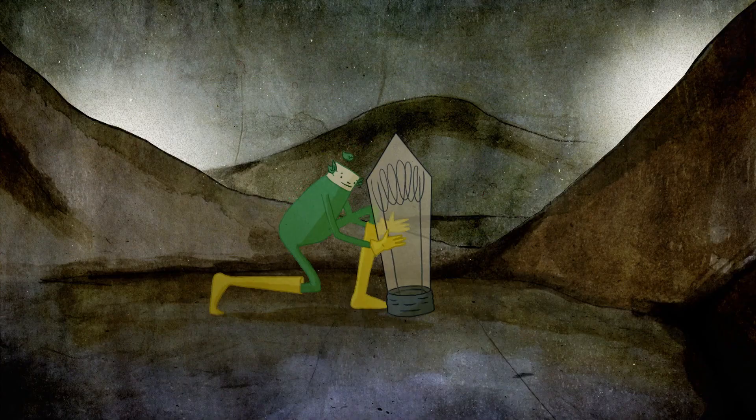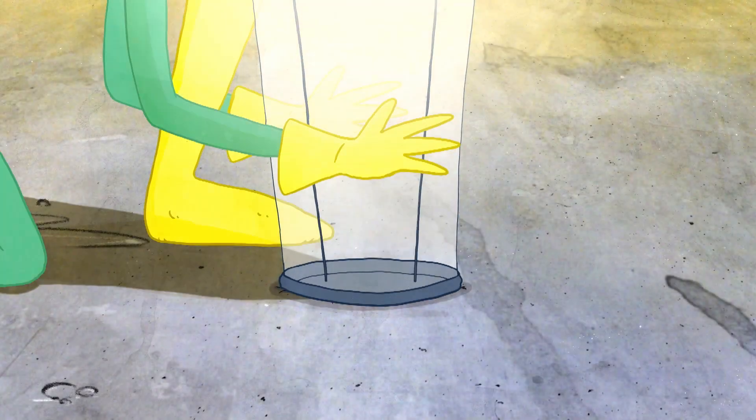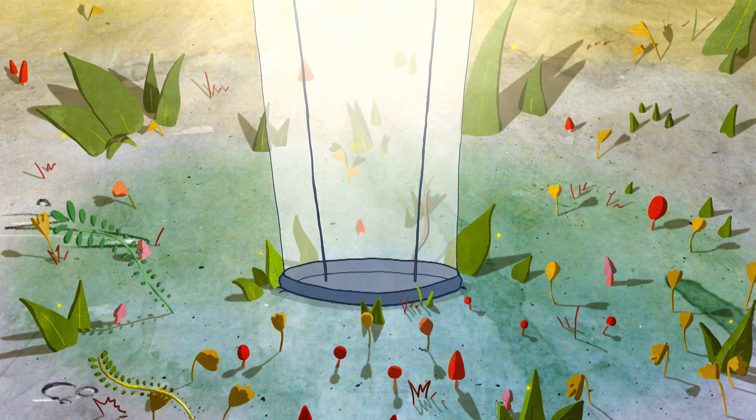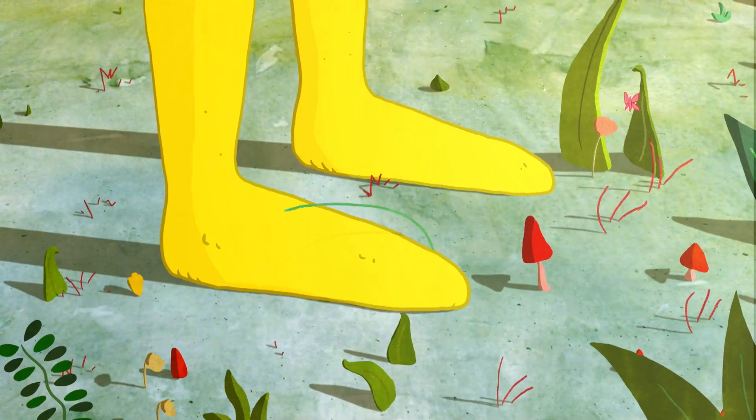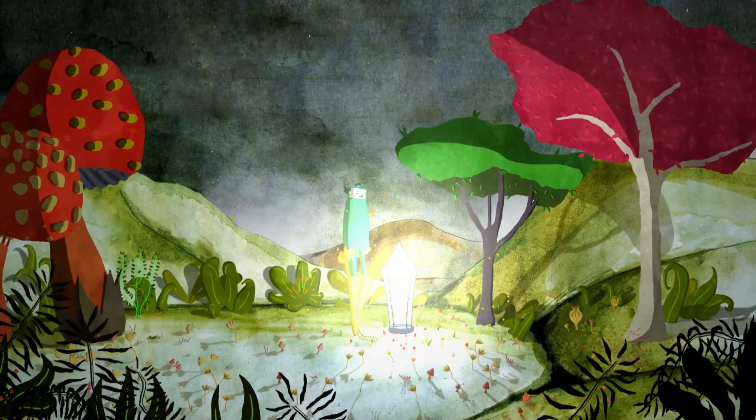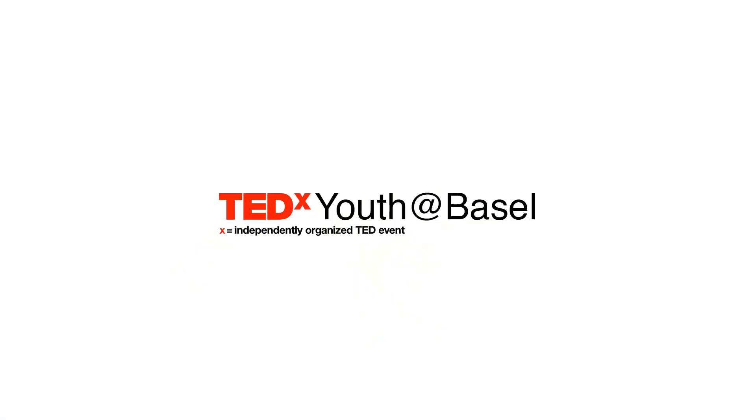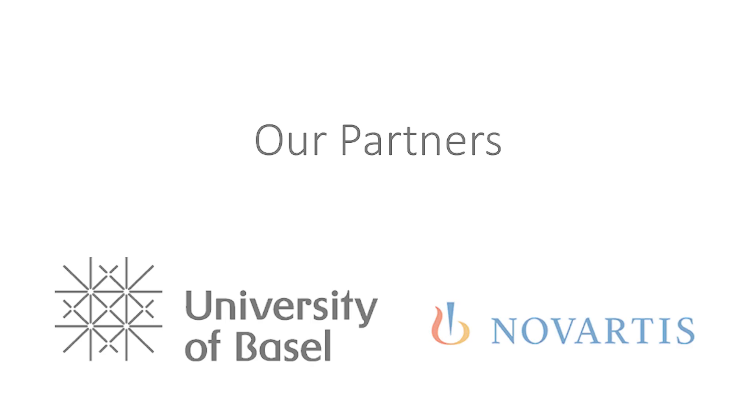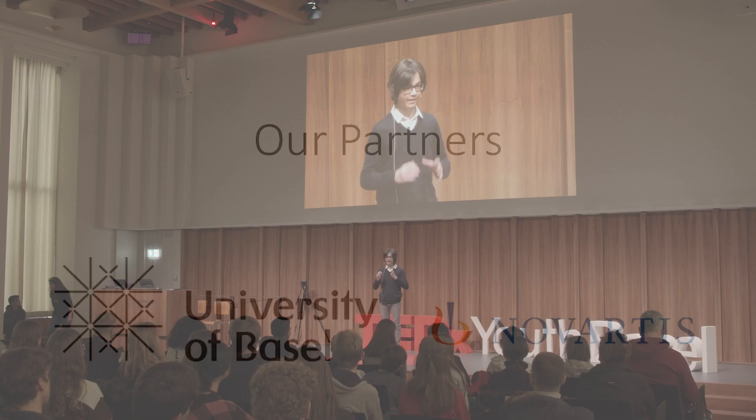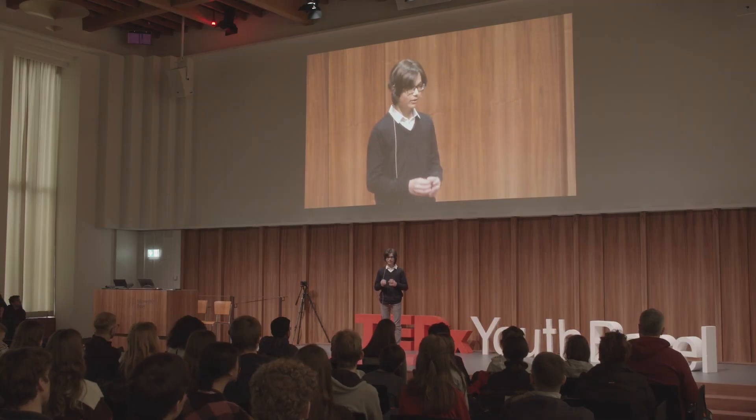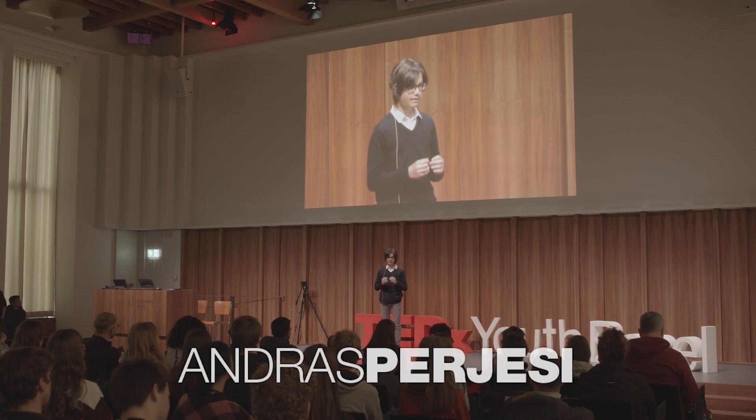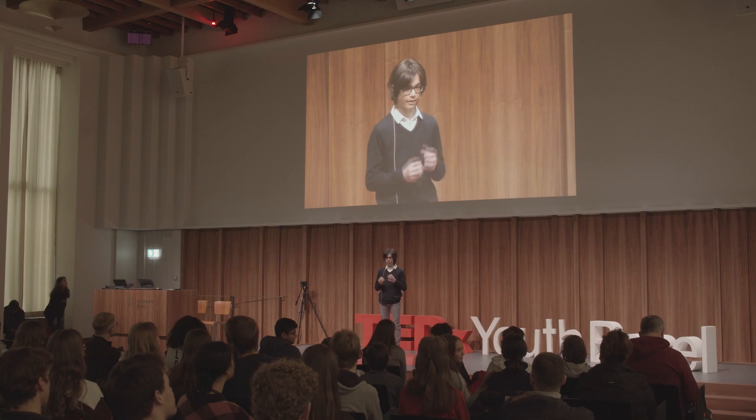The first one is 8 factorial minus 6 factorial divided by 3 factorial times 5 factorial. Well, seems confusing, right?